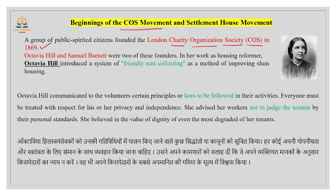COS was formed in 1869 by a group of public-spirited citizens — meaning people who work for the welfare of others and for society. Among them, the names are Octavia Hill and Samuel Barnett, by whom this movement was established and run. In her work as a housing reformer, Octavia Hill introduced a system of friendly rent collecting — a method through which slum housing could be improved through different activities.